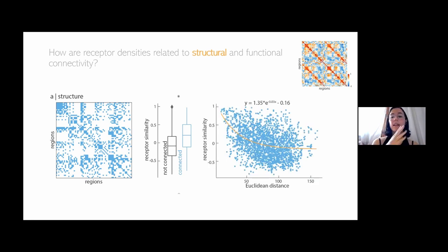We also find this negative exponential trend between receptor similarity and the distance between every two brain regions. Brain regions that are close together are more likely to have similar receptor fingerprints, and brain regions that are far apart are more likely to have different receptor fingerprints. This is a property that has been shown for many things like gene co-expression, temporal similarity, functional connectivity, et cetera. It makes sense that receptors should be organized according to similar organizational principles of the brain.